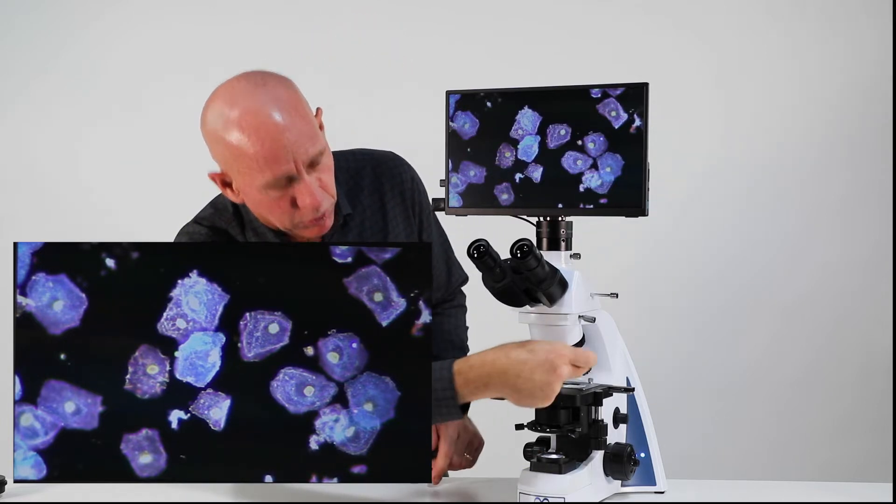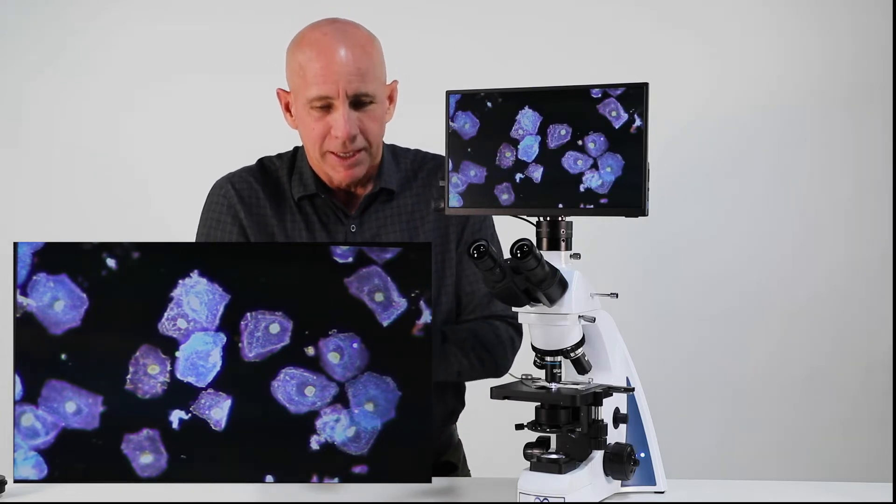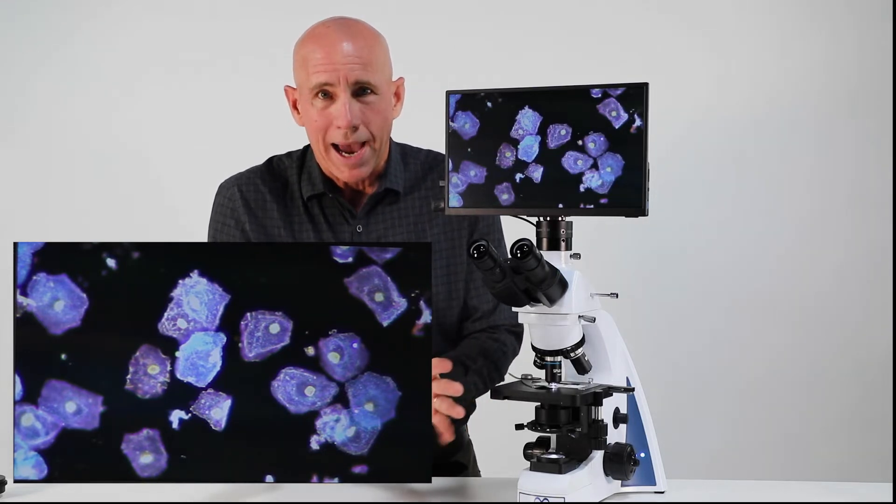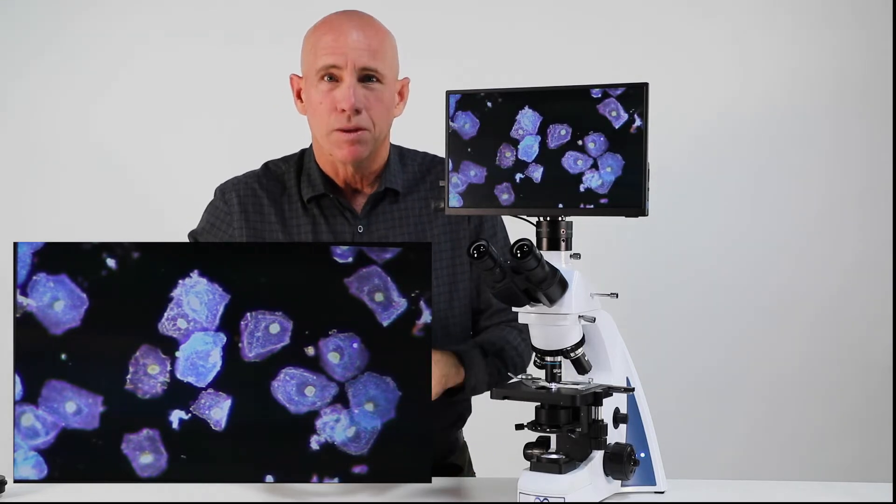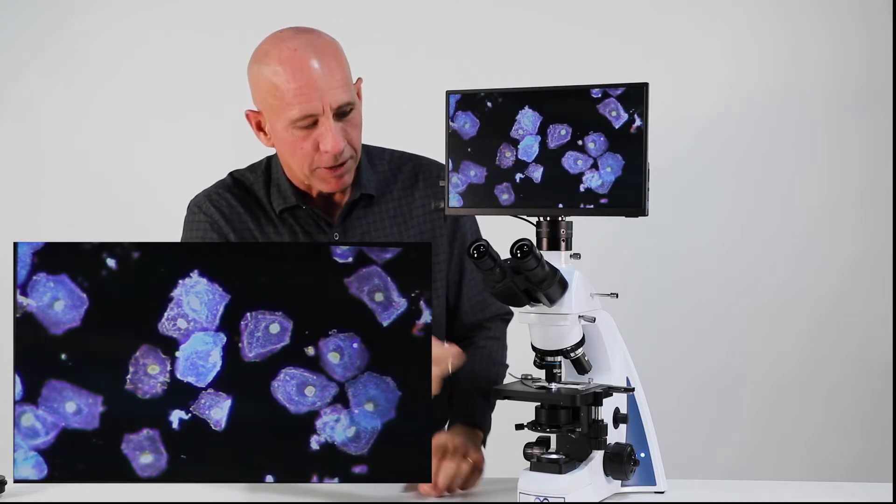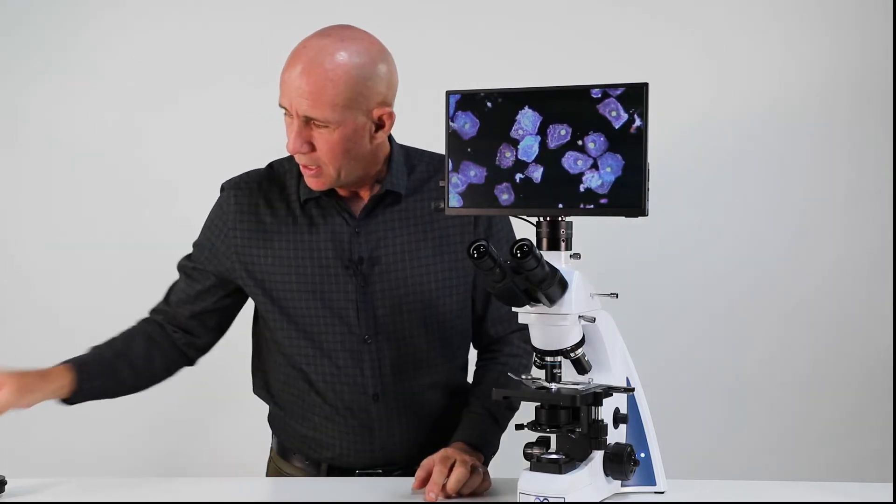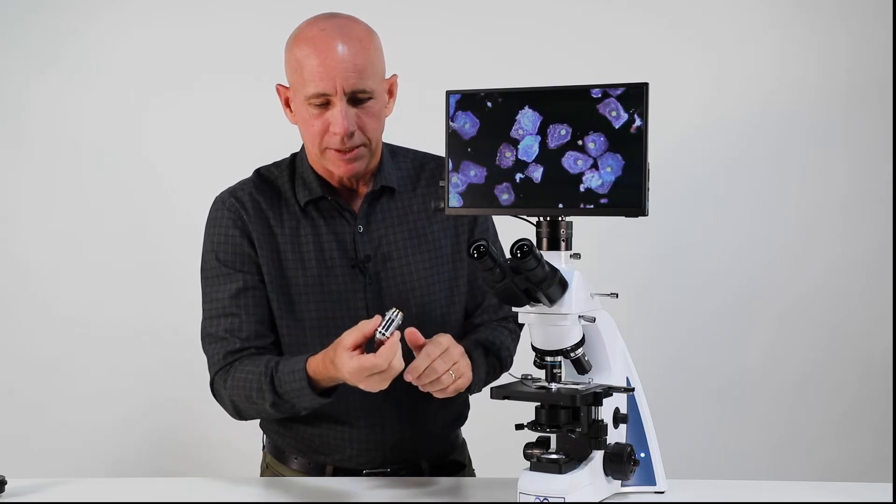That means when you go to your 100X oil, it's not going to work. It's going to be bright. Basically the aperture of the objective is so wide that it can still gather the light. Because what's happening here is it's blocking the middle of the light. And so it's dark in the middle.